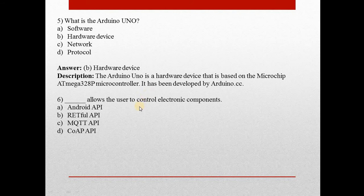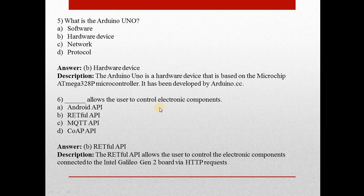Question six: What allows the user to control electronic components? Answer is B — It allows the user to control the electronic components connected to the Intel Galileo Generation 2 board via HTTP request.